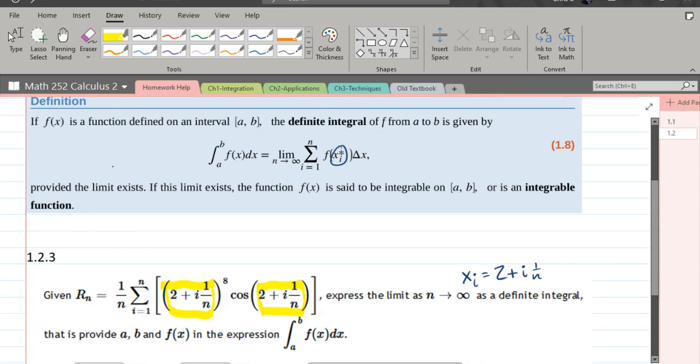This is xi right here, and I'm going to rewrite it above. We have xi to the eighth power times cosine of xi. Looking up above, what I just wrote down is f of xi.